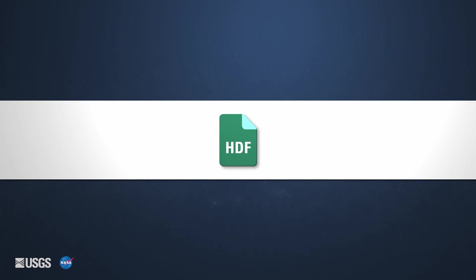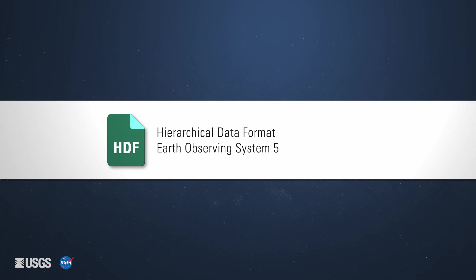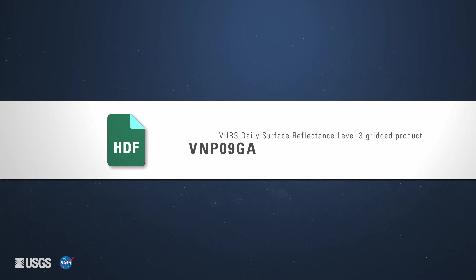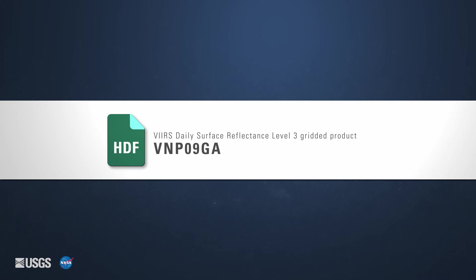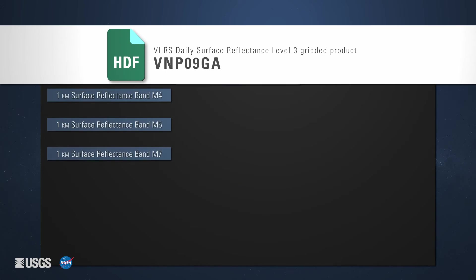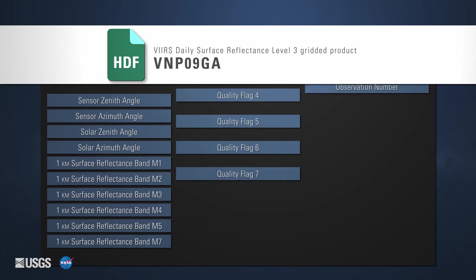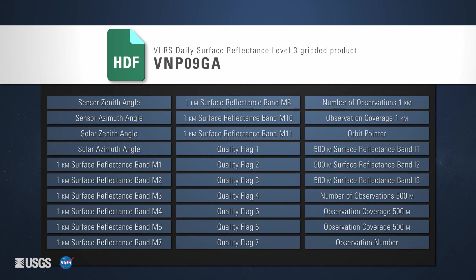VIIRS surface reflectance products are distributed as Hierarchical Data Format, Earth Observing System 5, or HDF-EOS5 products. The file name contains the short name VNP09. Here is a visual representation of the data stored within a single file for the VIIRS daily surface reflectance level 3 gridded product, VNP09GA.